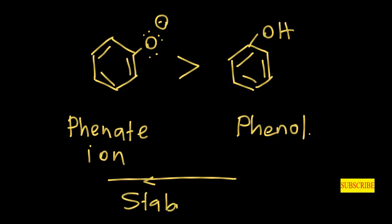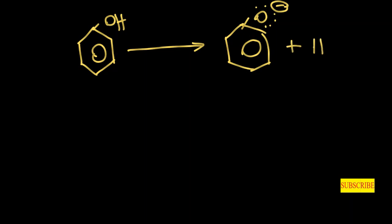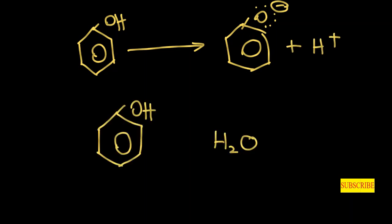The stability of phenol is lower than phenate ion. Because of that reason, phenol rapidly dissociates into phenate ion in aqueous solution. Because of this reason, the acidity of phenol is higher than the acidity of H2O.